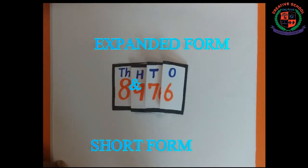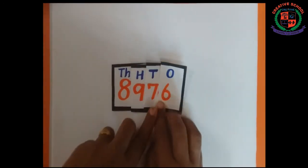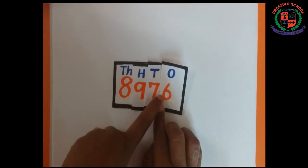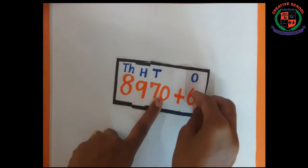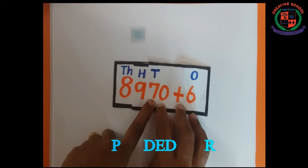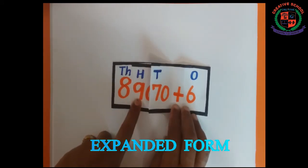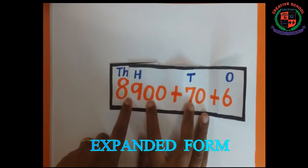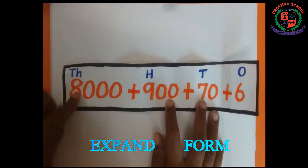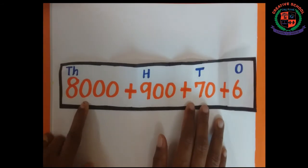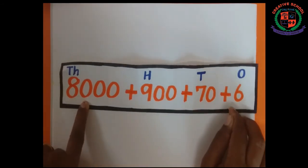We are going to see expanded form and short form. This is the short form: 8976. How to write this in expanded form? Because 7 is in tens place, so 7 into 10 is equal to 70, so 70 plus 6. Then 900, because 9 is in hundreds place. Then 8000 because 8 is in thousands place. So this is the expanded form.